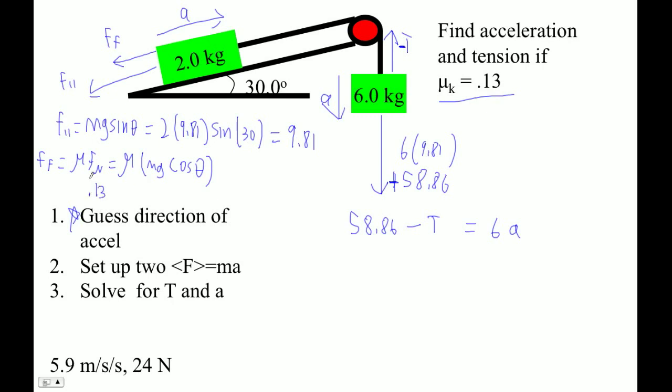This doesn't come out even, so 0.13 times 2 times 9.81 times cosine of 30. Let's make sure we're doing this right. I'm going to store that in some variable. So 2.209.